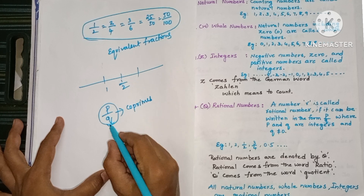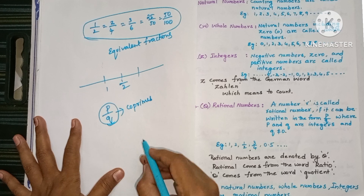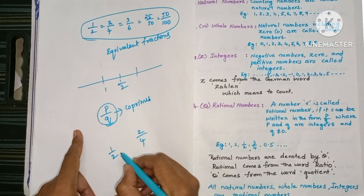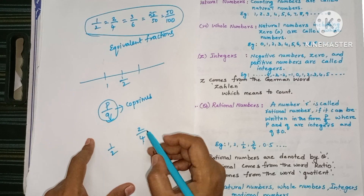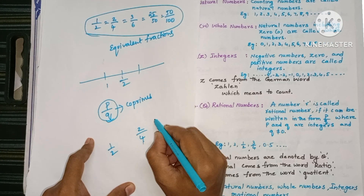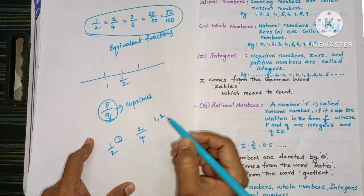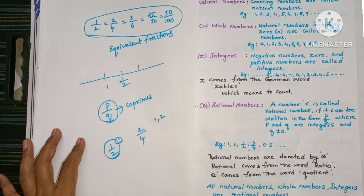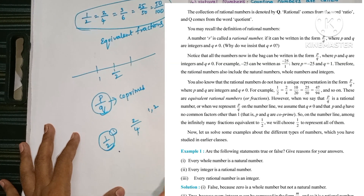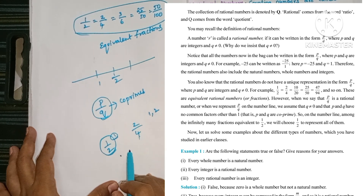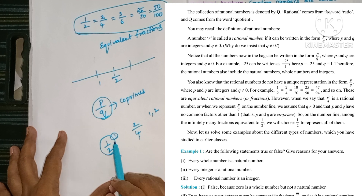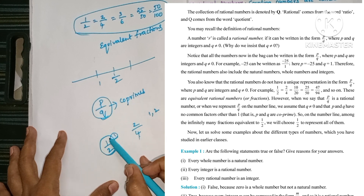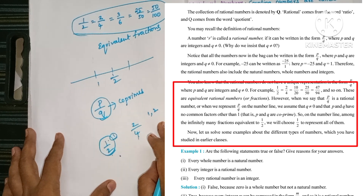Co-primes means they have no common factor other than 1. For 2/4, the numbers 2 and 4 share a common factor of 2, so it is not in simplest form. But for 1/2, the only common factor of 1 and 2 is 1 — so we represent 1/2 on the number line with the condition that the numerator and denominator are co-primes.